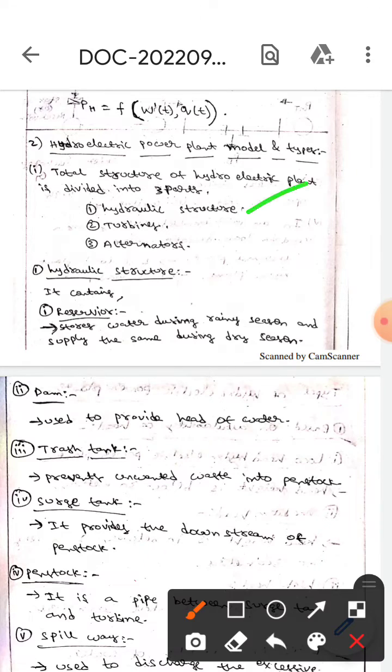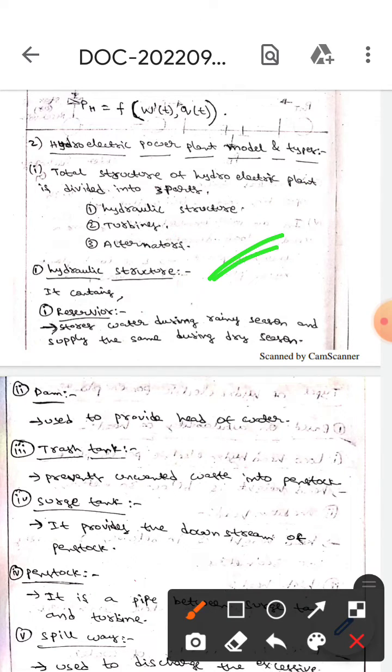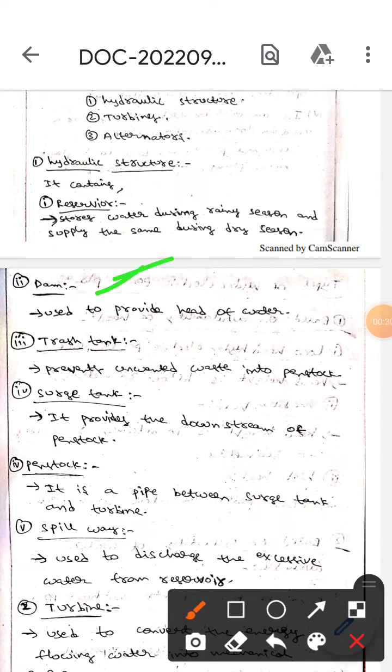Let's first discuss hydraulic structures. It contains a reservoir, which is used to store water during the rainy season and supply the same during the dry season. The next one is the dam, which is used to provide the head of the water. The trash tank prevents unwanted waste from entering the penstock.